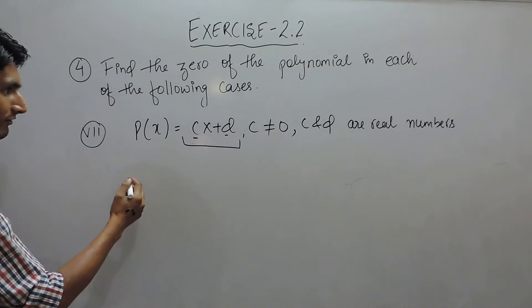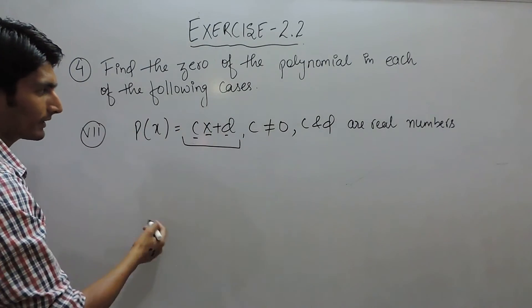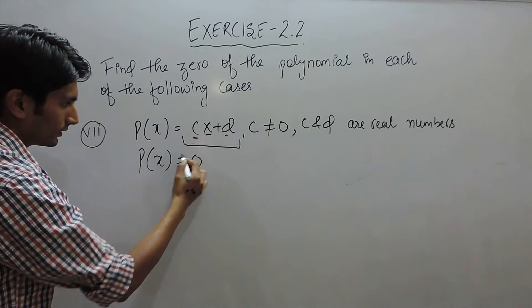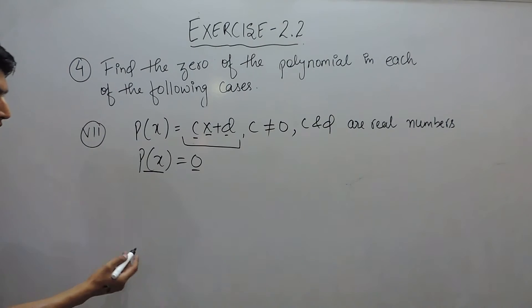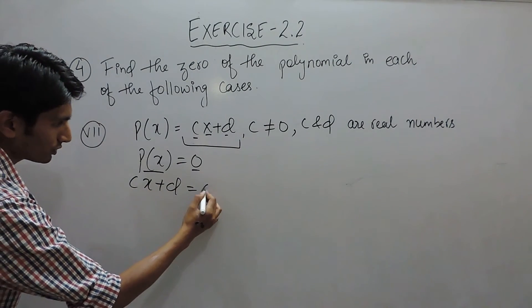So if you want to find the value of x for which this polynomial becomes 0, the value of this polynomial must be equal to 0, so this is actually cx plus d equals 0.